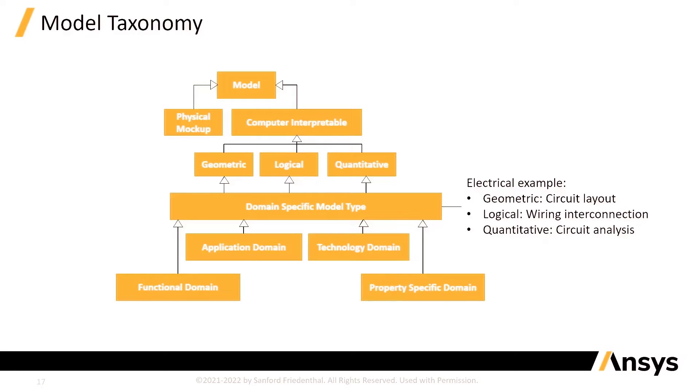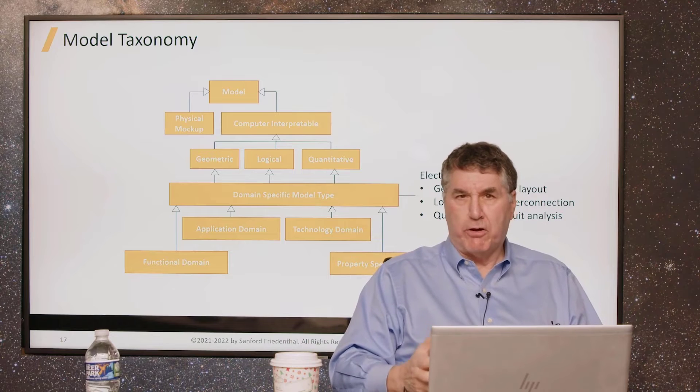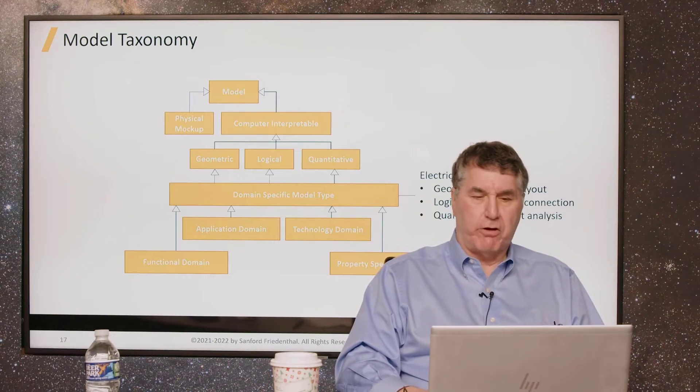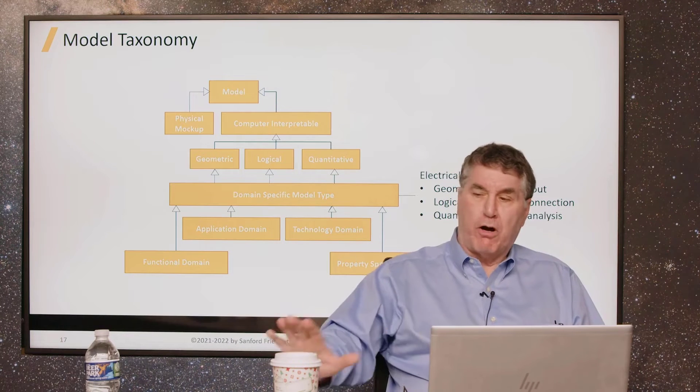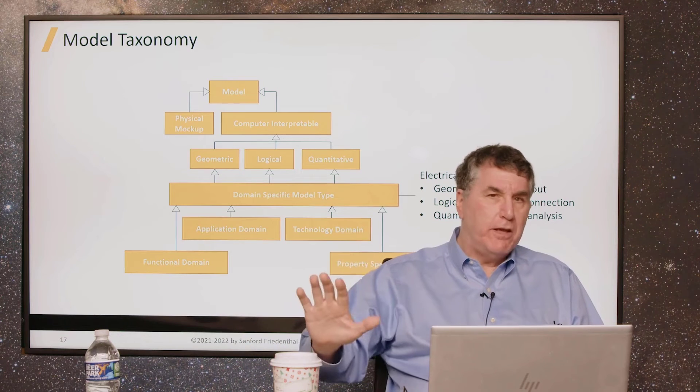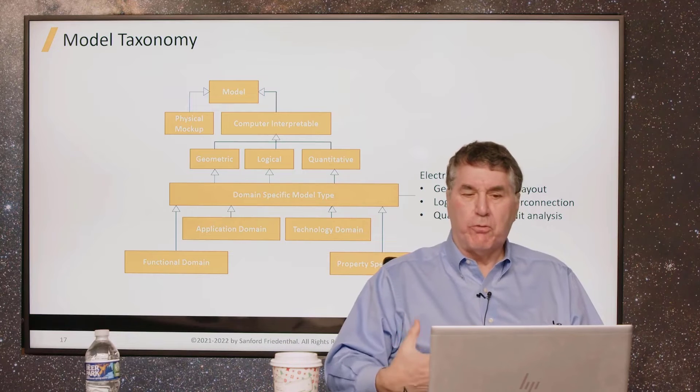Our interest here is more on the computer interpretable models that are shown to the right. And if you look at the different kinds of computer interpretable models, you can classify those in the way shown here. There are probably many other ways you can classify them, but we see the geometric representation, a quantitative representation, and a logical representation. The geometric representation would be a typical 3D geometric model of your system. Any engineer would be familiar with that, and even non-engineers are pretty familiar with a geometric model. Very sophisticated, very complex models, and they've evolved from drawings back in the 80s to 2D models in the 90s and 3D models today. And what they're able to do with those 3D models is pretty amazing.